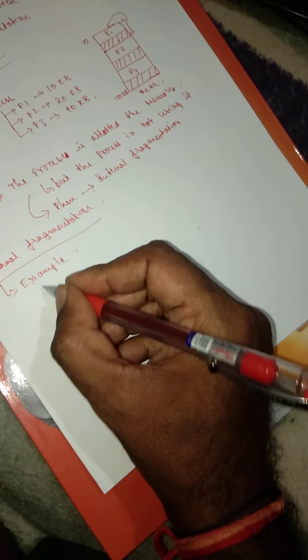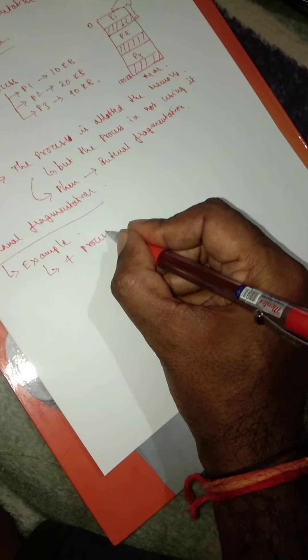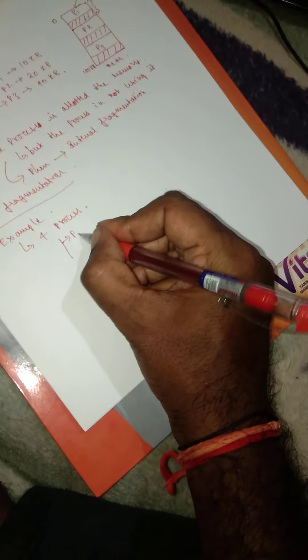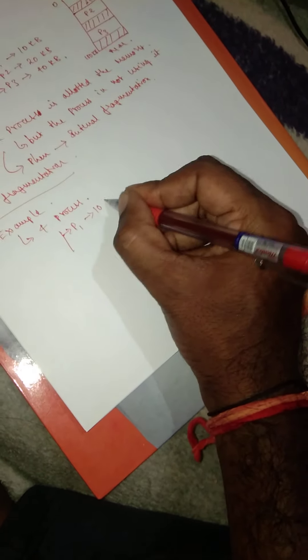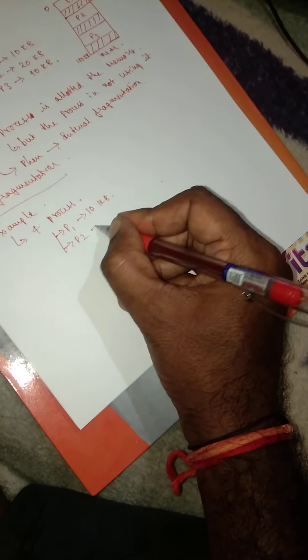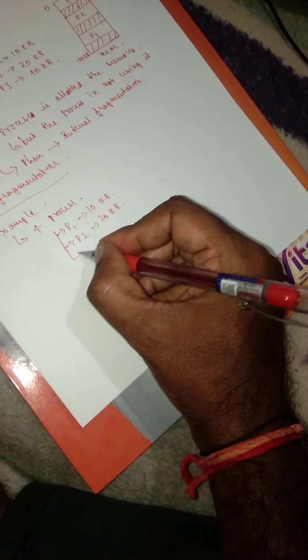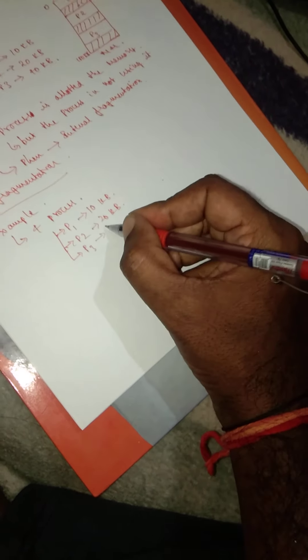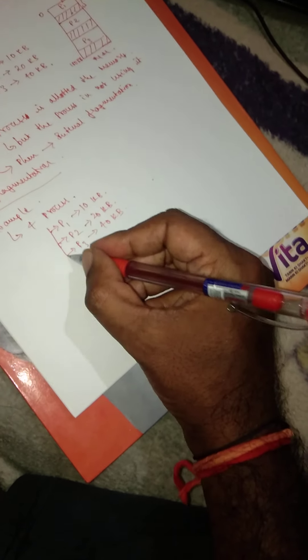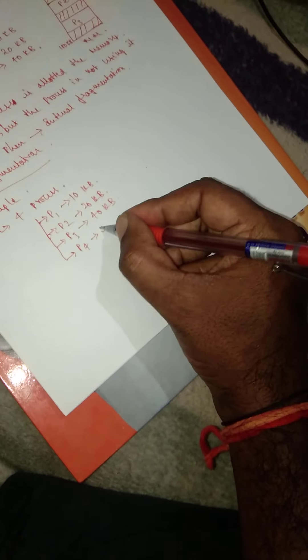In this case, let me assume there are four processes. Process P1 requires 10k, process P2 requires 20k, process P3 requires 40k, and process P4 requires 50k.